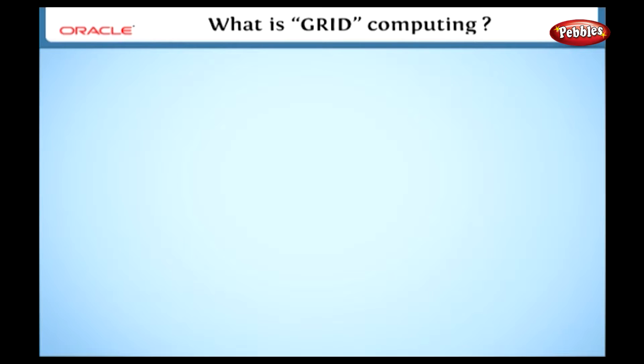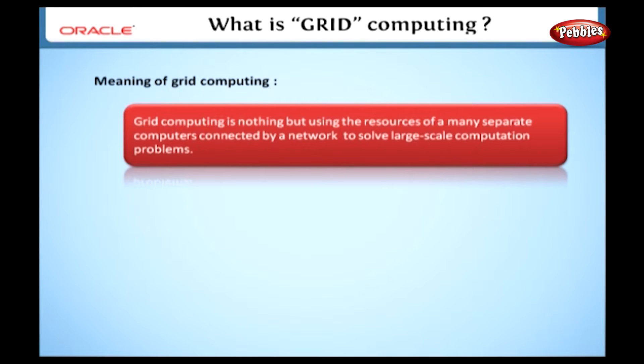Before getting to know the Oracle grid architecture, we will see the general meaning of grid computing. Grid computing is nothing but using the resources of many separate computers connected by a network, usually the Internet, to solve large-scale computation problems. I hope this definition will give you a general idea about grid computing.